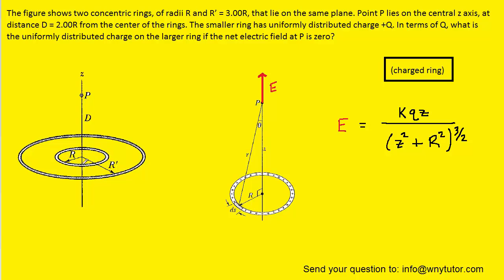The question notes that the smaller ring has a uniform charge distribution whose total charge is equal to positive Q, so we can label that. As we just noted, when the ring contains positive charge, the electric field at point P is going to point away from the center of that ring. So we can project an electric field vector upward. In order to get a net electric field of zero at point P,